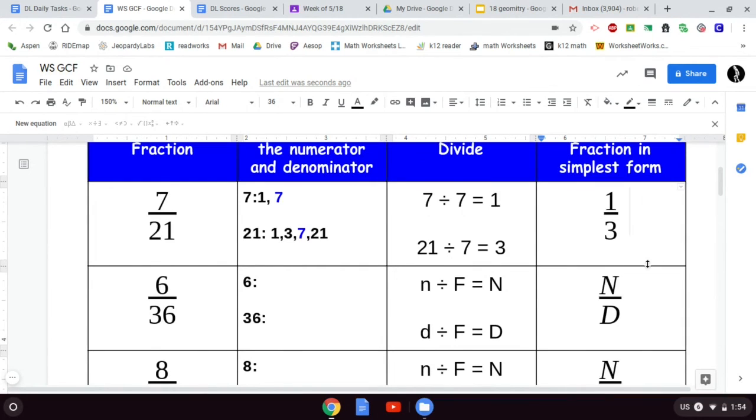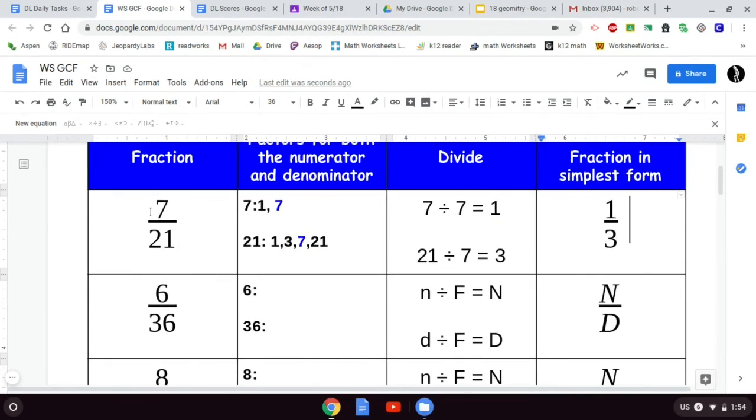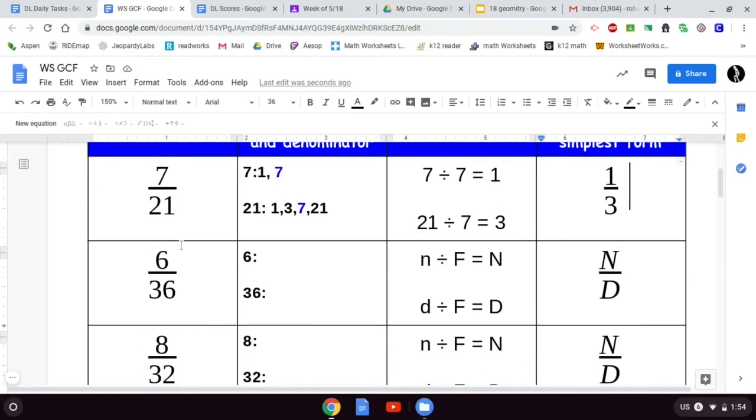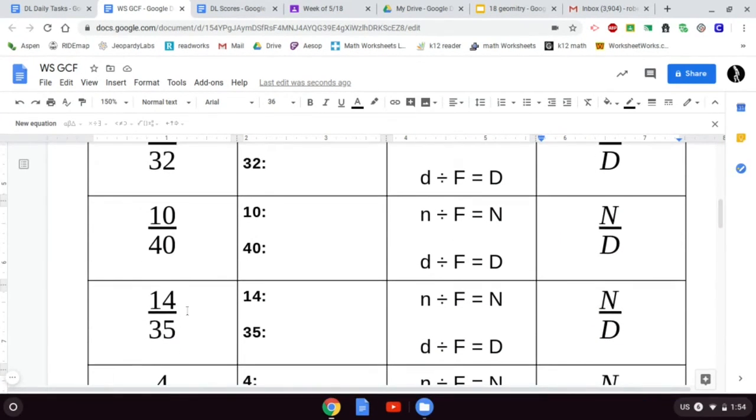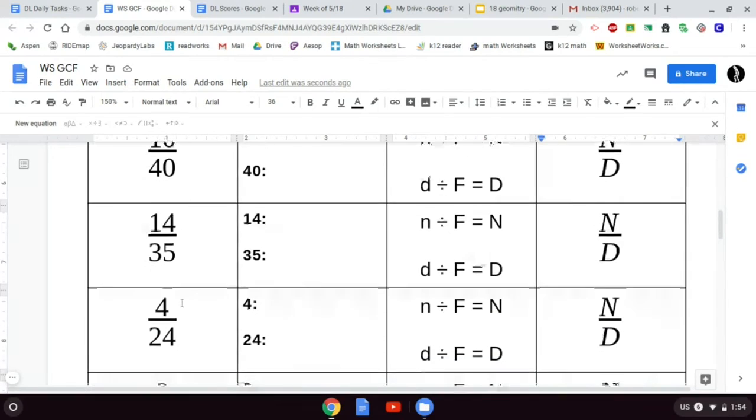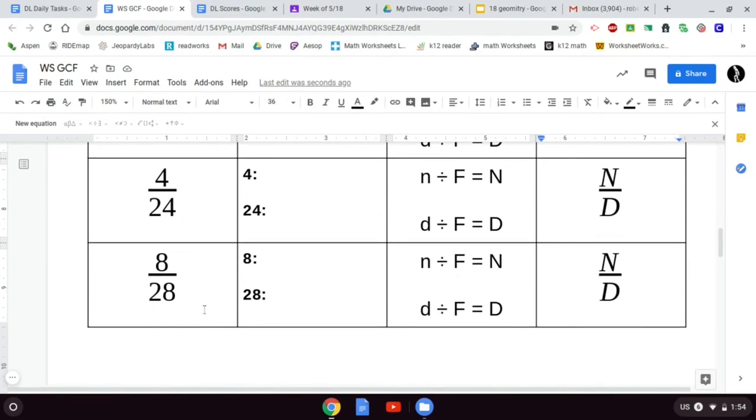Your fractions are 7 out of 21, which we've already done so you should have no problem getting that squared off, 6 out of 36, 8 out of 32, 10 out of 40, 14 out of 35, 4 out of 24, 8 out of 28. And that's it.